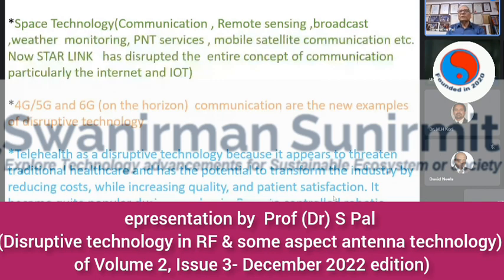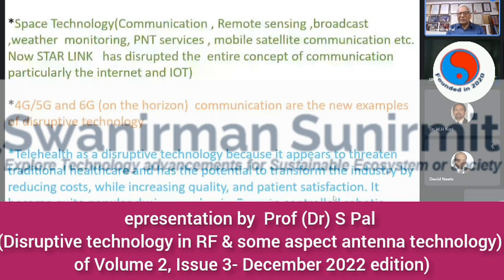All these disruptions are happening because of digital technology availability, miniaturization, increasing processing power, new materials, and manufacturing technology with 3D printing, which has changed the total concept of machinery. We are seeing disruption in every part of our life. 4G, 5G, and 6G on the horizon are new examples of disruptive technology. If Elon Musk continues on the same path, by 6G we may get coverage from satellites directly — we won't even need towers, with beam switching happening in space itself.